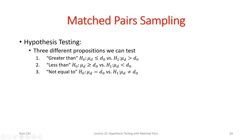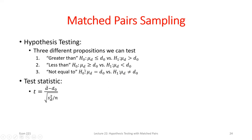That makes a lot of sense — we want to know if the change in productivity was positive, negative, or zero. We still have our two-tailed test, right-tailed test, and left-tailed test, exactly the same as before. Nothing really new here. Our test statistic equation — remember what we were doing with one population — we're going to have a T statistic again because we only have a sample variance.